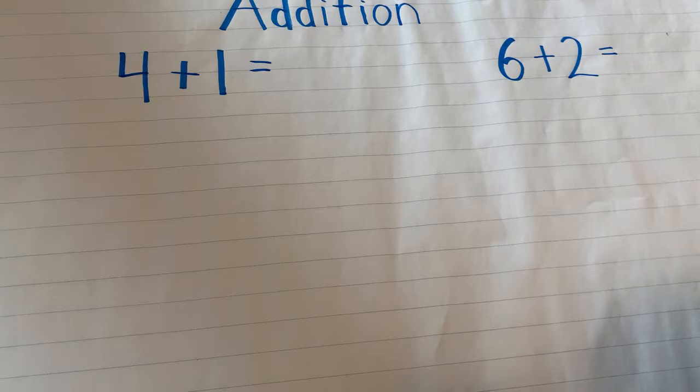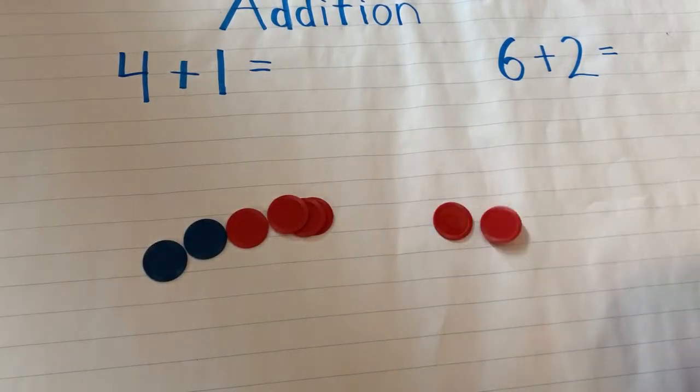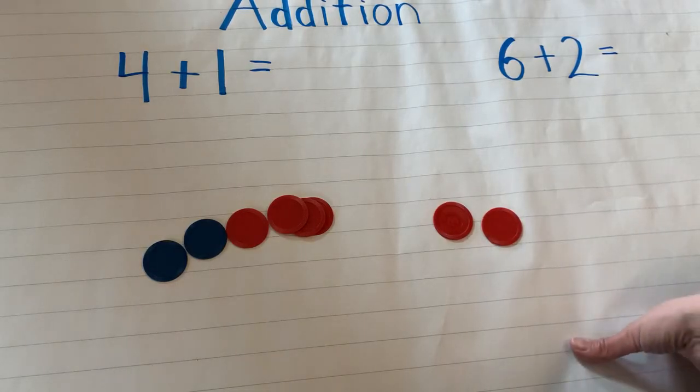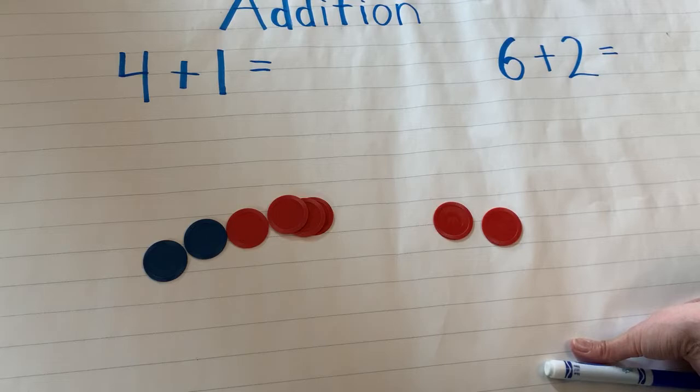So yesterday I spoke to you about how we use things like tokens to add things together. But we can also use sticks, rocks, pasta, anything at all really to help you count or add numbers.